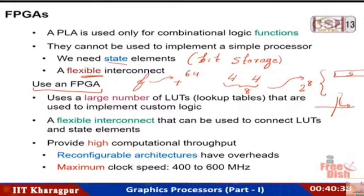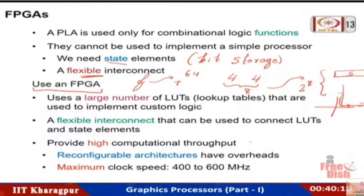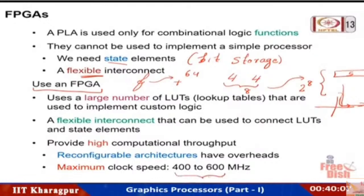FPGAs also use something called an antifuse, which is a persistent element — once programmed, it maintains its state and ensures signals get routed accordingly. FPGAs are extremely flexible and have a very large number of logical units, so you can implement massive parallelism.